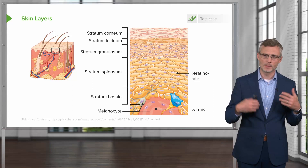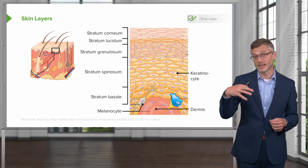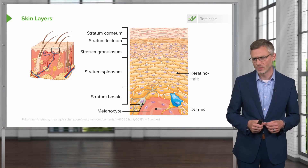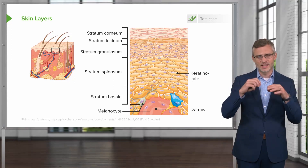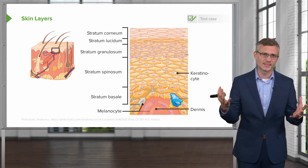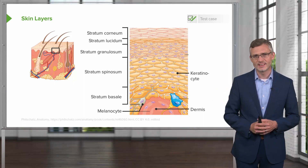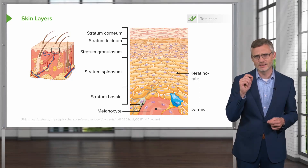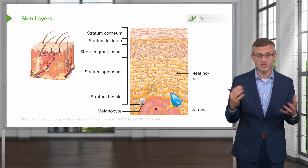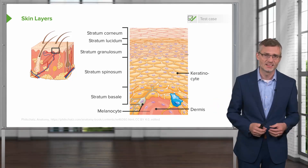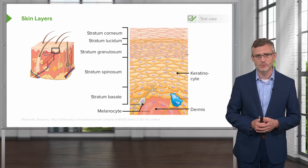Depending upon where an immune-mediated attack occurs, that's going to dictate how tense the bullae on the outside is. If the lesion is within the keratinocytes in the epidermis, then the skin is going to be very thin and it's unlikely that the blisters will stay intact. Whereas if the autoimmune attack is at the hemidesmosomes — at the junction between the epidermis and the dermis — essentially the epidermis is completely intact, and so those bullae are going to be tense and are going to stay strong and intact rather than falling apart.